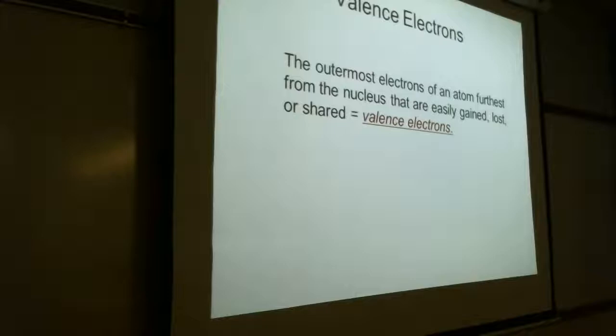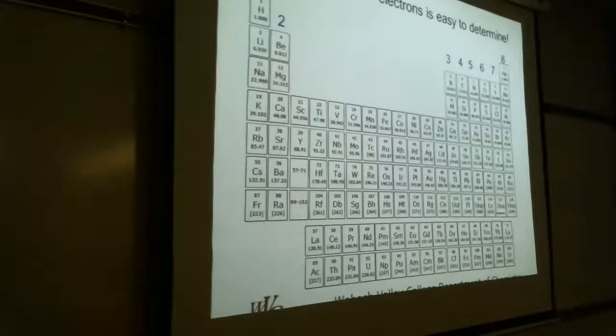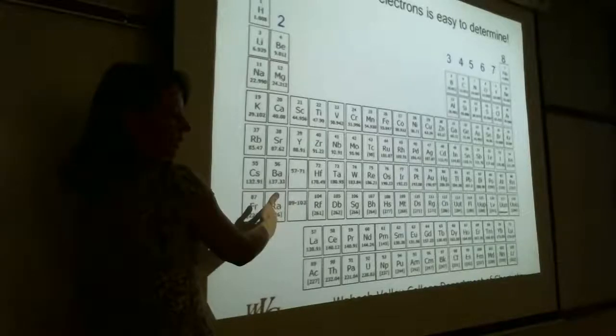Valence electrons are those furthest away from the nucleus. We haven't talked about the quantum model yet — we'll get into greater detail later in the semester. Right now we're going to get into bonding, and then when we go back to the quantum model, we can tie it back. Valence electrons are the ones we can gain, lose, or share easily.